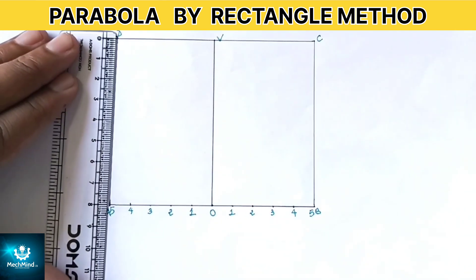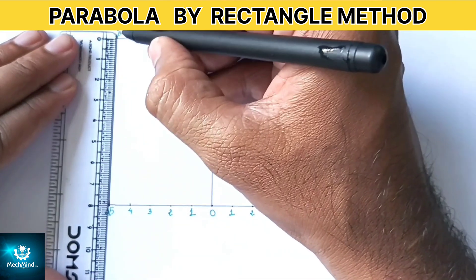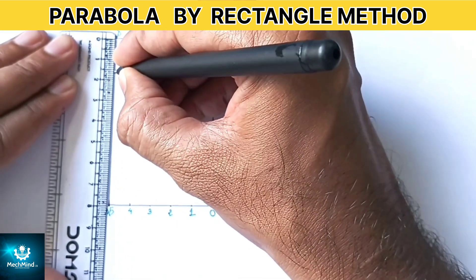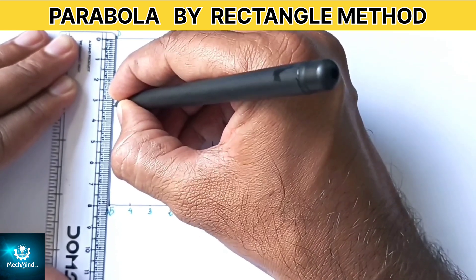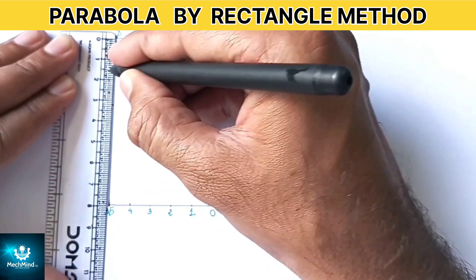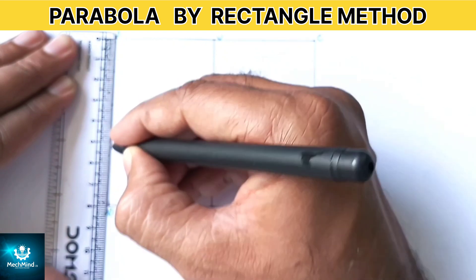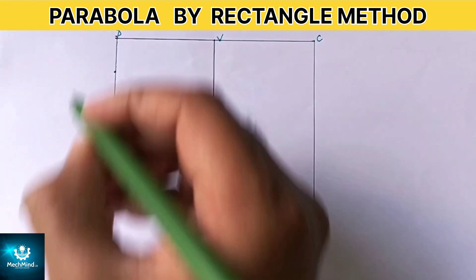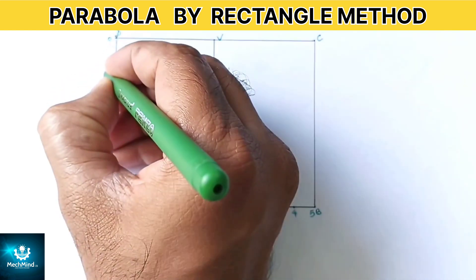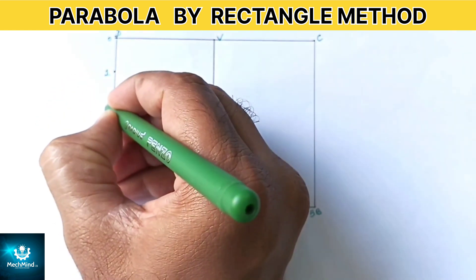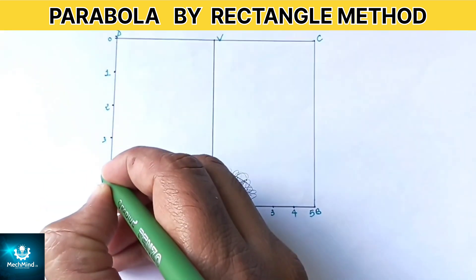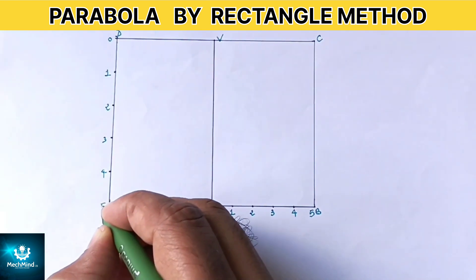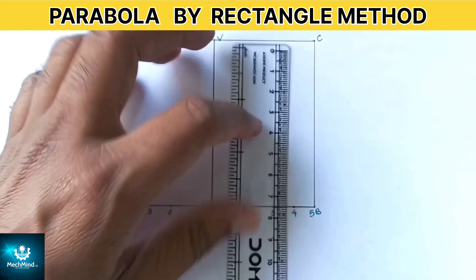Next divide line AD into same number of equal parts. Here line AD equals 80 mm, so divide into 5 equal parts each part of 16 mm. Mark these points as 0, 1, 2, 3, 4 and 5 starting from point D towards A. Similarly divide the line BC.